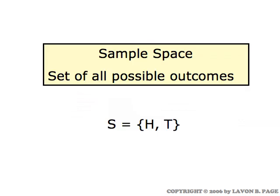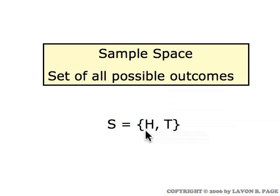To start out with, we're going to consider very simple experiments where it's easy to know what all the possible outcomes might be. For example, if we're tossing a coin, the only things that can happen are the coin will come up heads or it will come up tails. To mathematically model probability, we start by listing the set of all possible outcomes, which we call the sample space. Here the sample space is named S, and the set of all possible outcomes if we're tossing a coin would be represented by the letters H and T, corresponding to heads or tails.